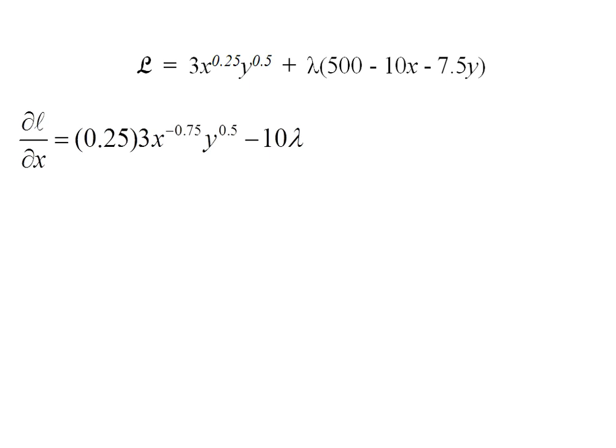I look to the second term to see if there are any x's. I do see one with a negative 10 attached to it, but it also has a lambda attached to it. If I distributed that lambda in, it would be 500λ minus λ10x minus λ7.5y. I can simplify the 0.25 and the 3, multiplying them together gives me 0.75 as the coefficient out in front.